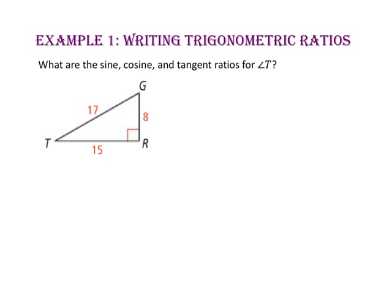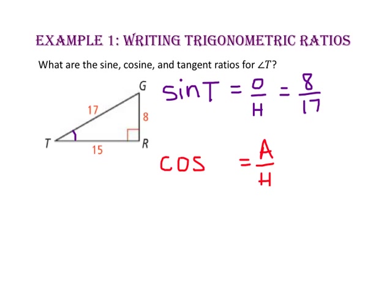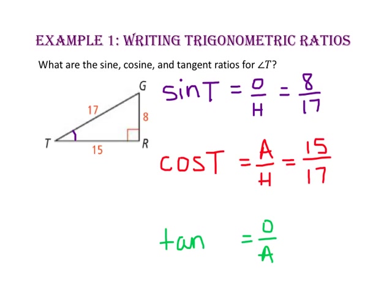In example one, we will write trig ratios. What are the sine, cosine, and tangent ratios for angle T? Let's start by marking angle T. Since sine equals opposite over hypotenuse, sine of angle T equals the length of the side opposite angle T, which is 8, over the length of the hypotenuse, which is 17. Since cosine equals adjacent over hypotenuse, cosine of angle T equals the side adjacent to angle T, which is 15, over the hypotenuse, which is 17. Since tangent equals opposite over adjacent, tangent of angle T equals 8 over 15.